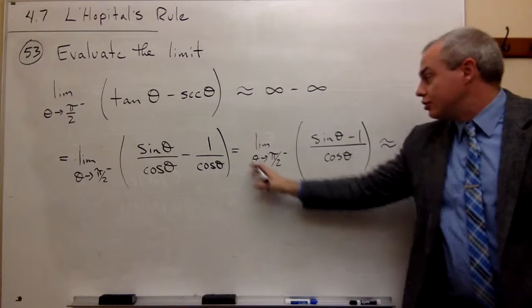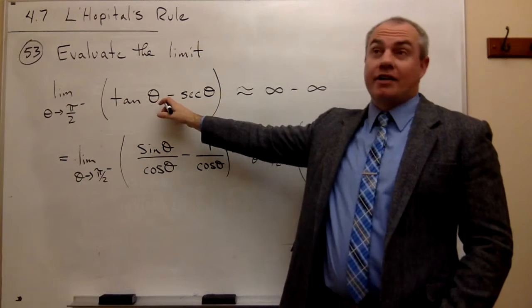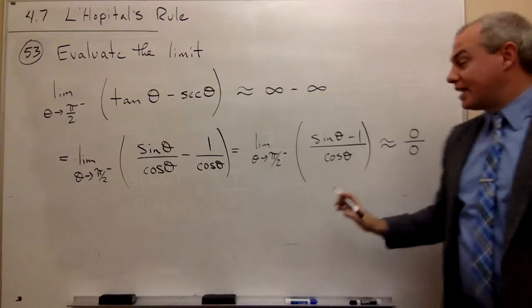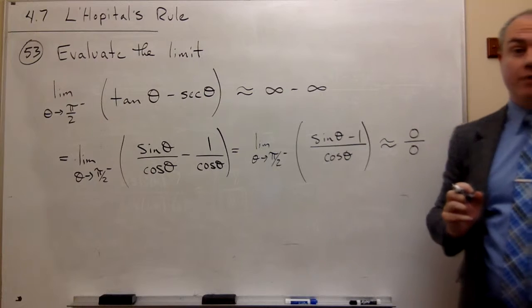So at this point, I can use L'Hôpital's rule on this guy. I cannot on this guy. That makes no sense. But I can in this case because now we have a form 0 over 0. So let's do it.